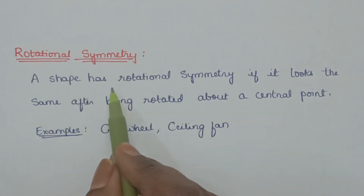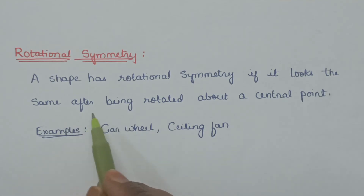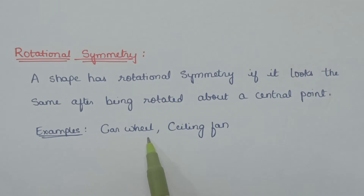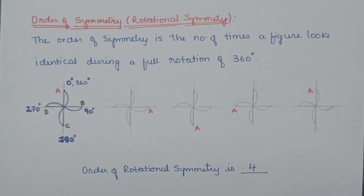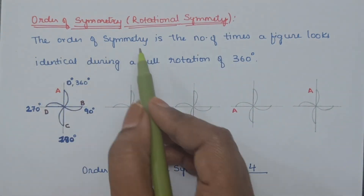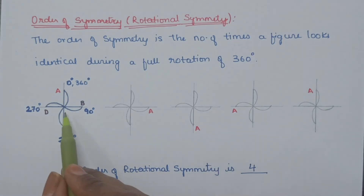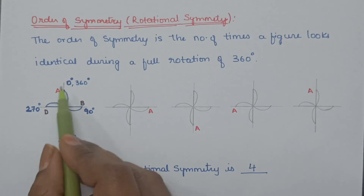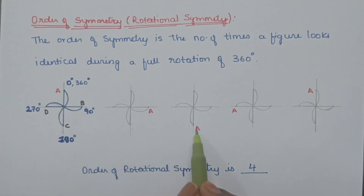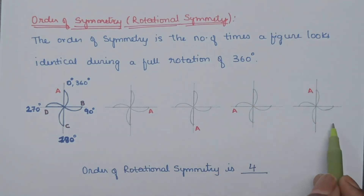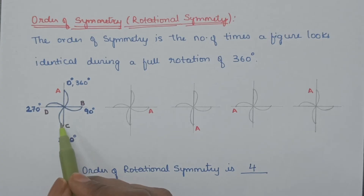Rotational symmetry. A shape has rotational symmetry if it looks the same after being rotated about a center point. Examples include a car wheel and a ceiling fan. The order of symmetry is the number of times a figure looks identical during its full rotation of 360 degrees. When this figure rotates at 90 degrees, 180 degrees, 270 degrees, and 360 degrees, the images are identical to its pre-image — that is, they align perfectly with its original shape.